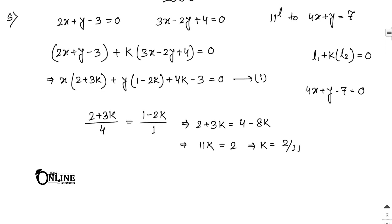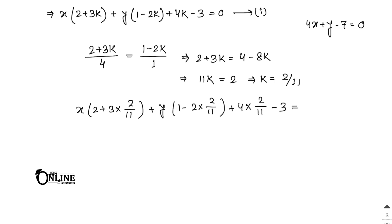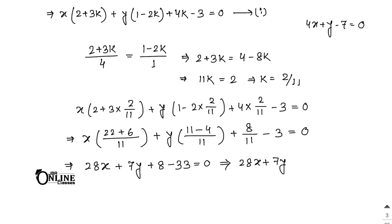Now you have to put the value of k in equation number 1. So x into 2 plus 3 into 2 by 11, then y into 1 minus 2 into 2 by 11, then 4 into 2 by 11 minus 3, equal to 0. With 11 as LCM: x into 22 plus 6 by 11, y into 11 minus 4 by 11, equals 8 by 11 minus 3. Multiplying through by 11: 28x plus 7y, then 8 minus 33, equal to 0. Final answer: 28x plus 7y minus 25 equal to 0.